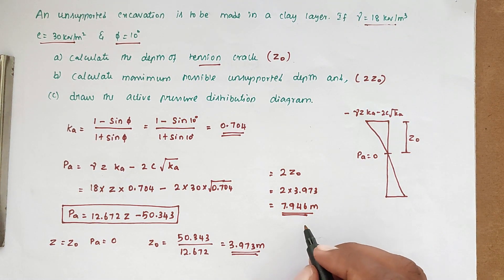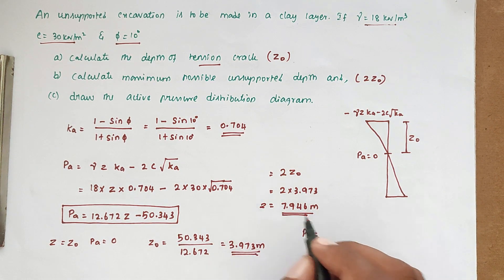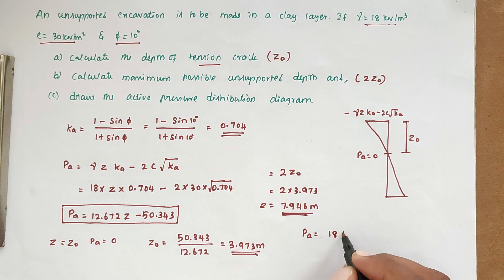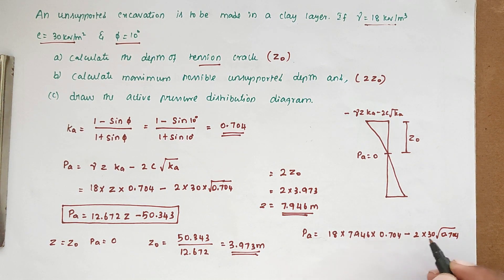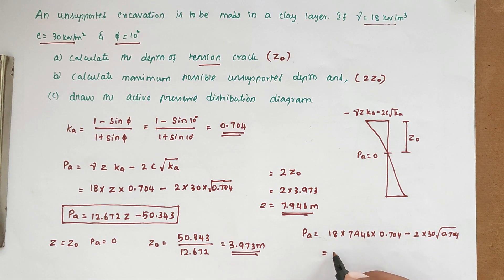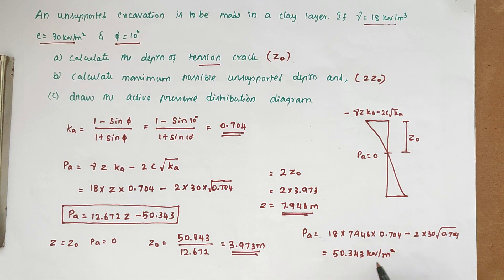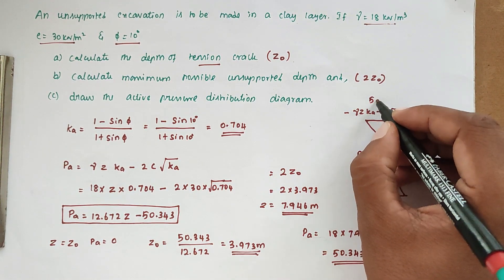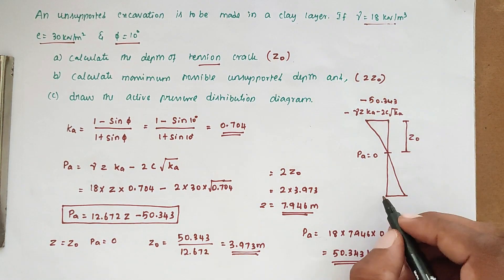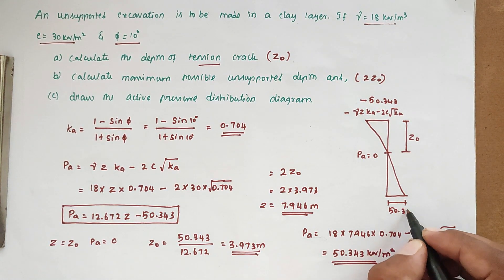Now we find the pressure at the bottom. Substituting z = 7.946 into the formula: Pa = 18 × 7.946 × 0.704 − 2 × 30 × √0.704. Solving this, we get a positive value of 50.343 kilo Newton per meter square. So in the pressure diagram, the negative pressure at the top is 50.343 and the positive pressure at the bottom is also 50.343 kN/m².